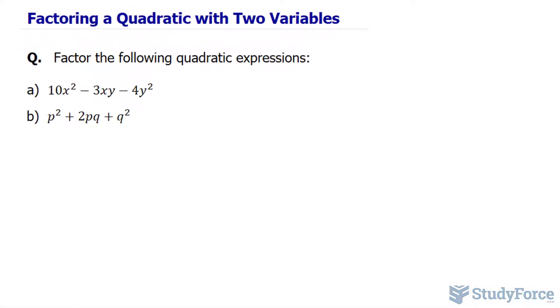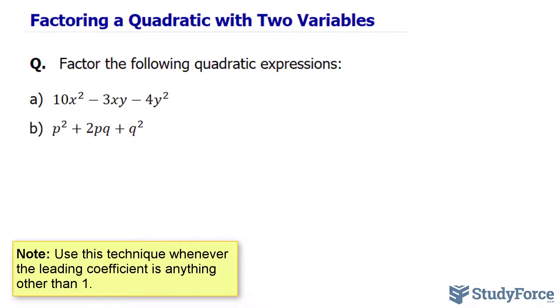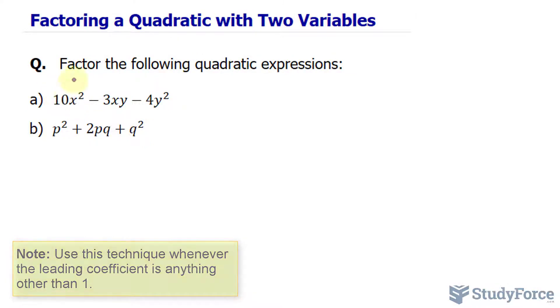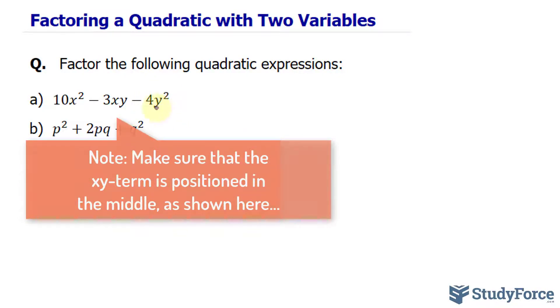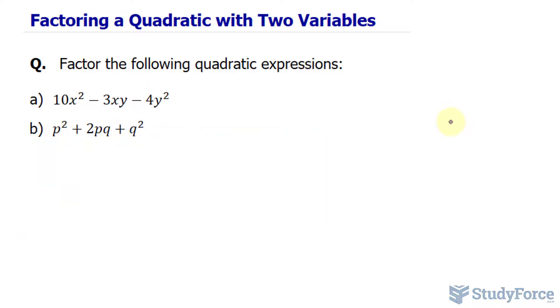In order to factor this, we have to use a technique known as decomposition. That involves multiplying the coefficient for this term by the coefficient of the last term that has y². So multiplying 10 and -4 together gives us -40.